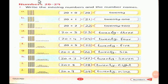Page number 27, numbers 20 to 29. This is a table and the tens we have to write in words.